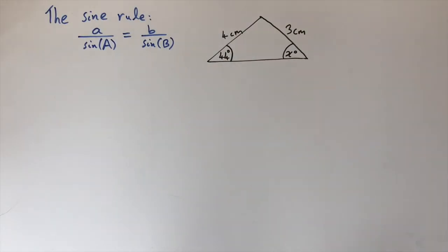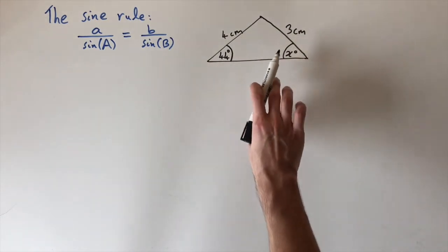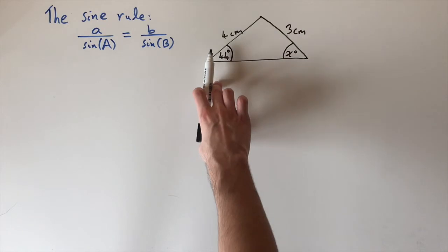Welcome back. Today we're looking at the sine rule again, but this time applying it to a problem that has two solutions. I'm going to explain this using an example. Let's look at this triangle. We're given that two of its sides are 4 centimeters and 3 centimeters, and one of the angles